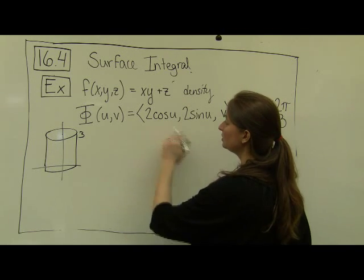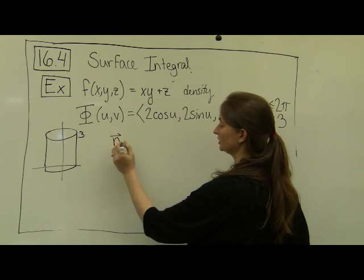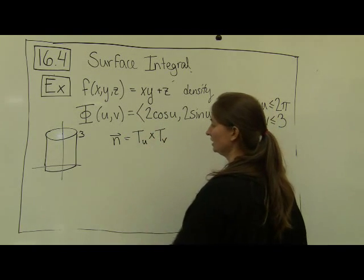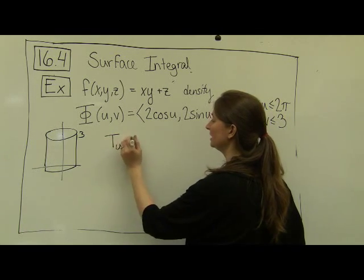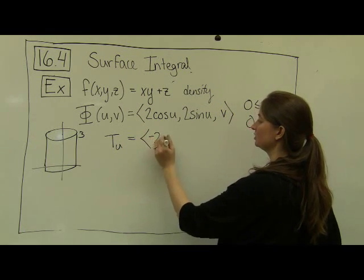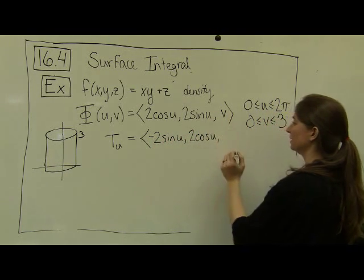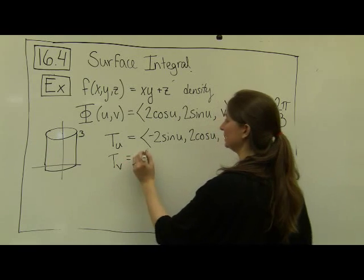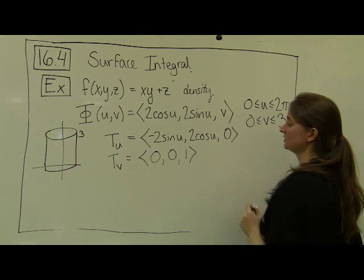So let's go ahead and compute all of the pieces that we need. The first piece that we need is to be able to compute the normal vector, which is the cross product of Tu and Tv. So we have to compute both Tu and Tv. And briefly, Tu is the partial derivative with respect to u, which in this case is negative 2 sine u, 2 cosine u, and the partial with respect to u is just 0. Similarly, Tv is equal to 0, 0, 1, because the partials of these derivatives are just 0.